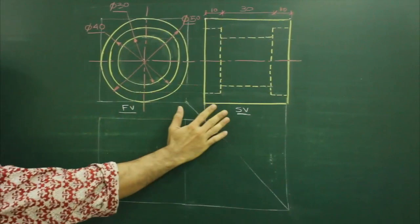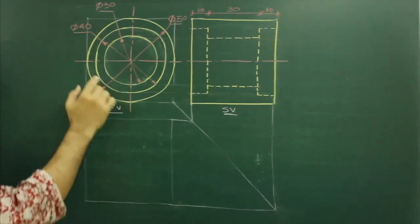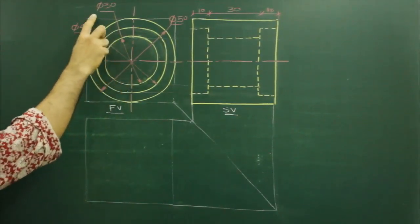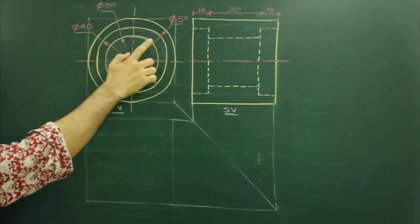In this drawing, we have front view and side view, and we need to draw a top view. Now if you see, there are three circles: diameter 30, diameter 40, and diameter 15.